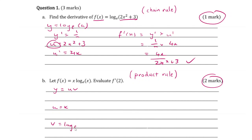v is equal to log of x, u dash is equal to 1, v dash is equal to 1 over x. We apply the product rule to get f dash x is equal to u v dash plus v u dash. We substitute in our functions to get x multiplied by 1 over x plus 1 multiplied by log of x.